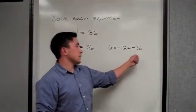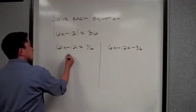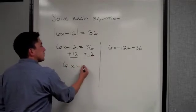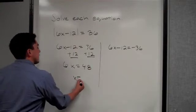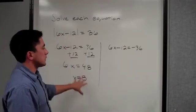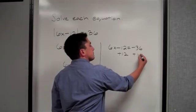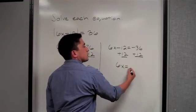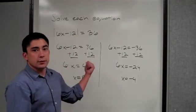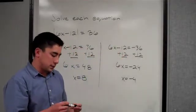We have two answers here, so let's put it down the middle. It comes down to basic math: add 12 to both sides, so 6x is equal to 48, divided by 6, x is equal to 8. For the other case, set it equal to negative 36 — add 12, you get 6x is equal to negative 24, therefore x is equal to negative 4. That's how you do absolute value problems: set it equal to the positive, set it equal to the negative, then solve for x.